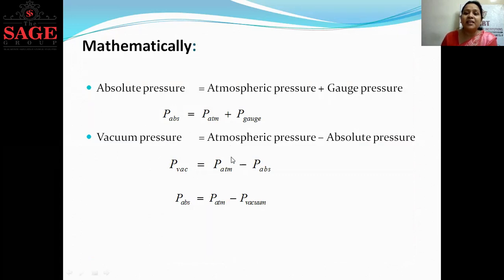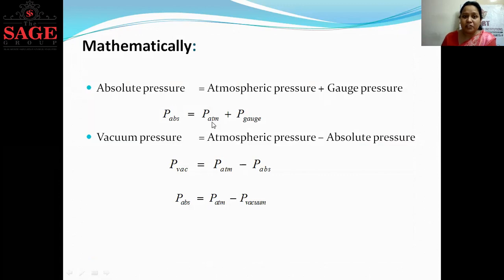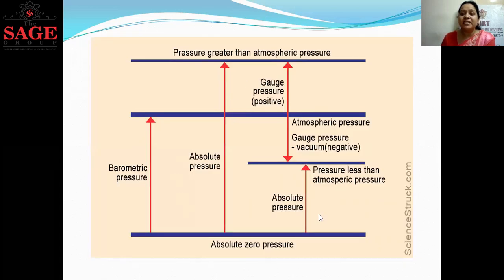Now here is the mathematical expression for absolute pressure and vacuum pressure. The equation is: Absolute pressure = P_atmospheric + P_gauge. Similarly, for vacuum pressure: P_vacuum = P_atmospheric − P_absolute. Hence, P_absolute = P_atmospheric − P_vacuum. These relationships are derived from the diagram.